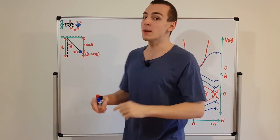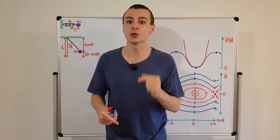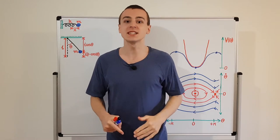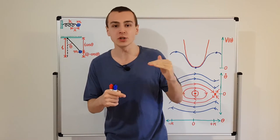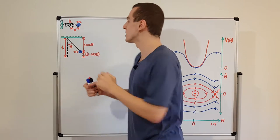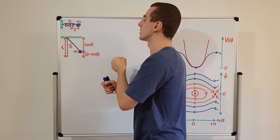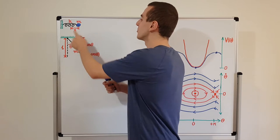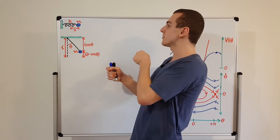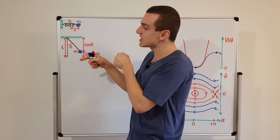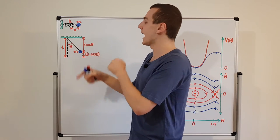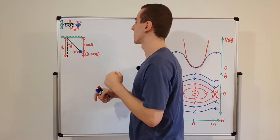We have a minus sign in Hooke's law because this is a restoring force — it counters movement away from equilibrium. If x is positive, then we have a force in the negative direction, and vice versa.